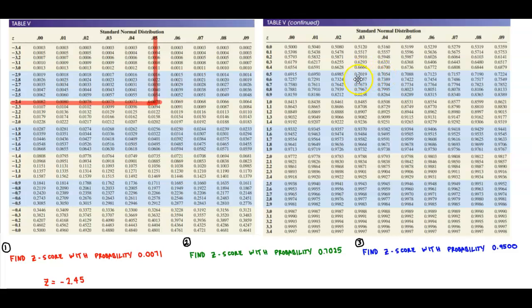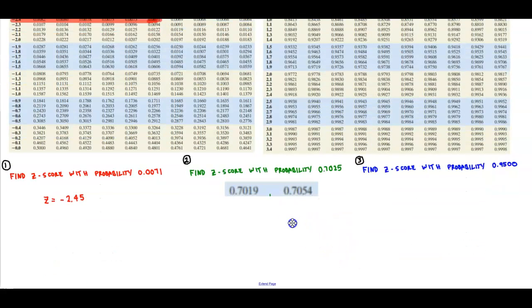But it's in between the values of 0.7019 and 0.7054. So those are the two values that it's in between. And now what we want to do is when we look at this number or this probability of 0.7025, is it closer to the one on the left or is it closer to the one on the right? Well, if we look here, it is closer to the area to the left. So that means we're going to choose 0.7019.